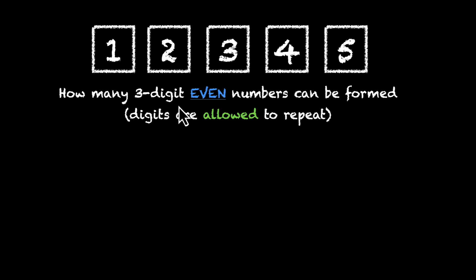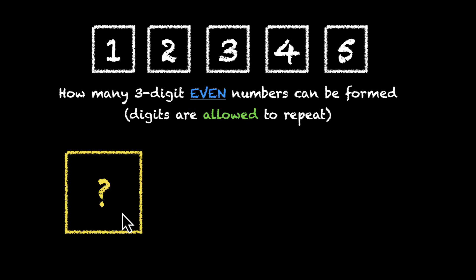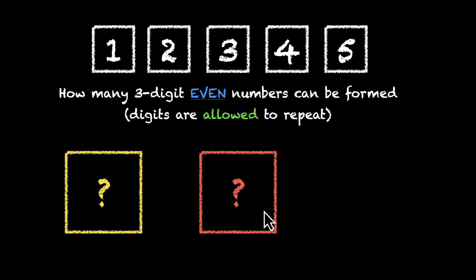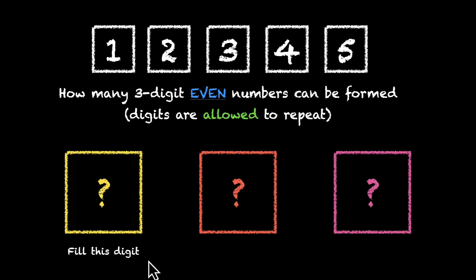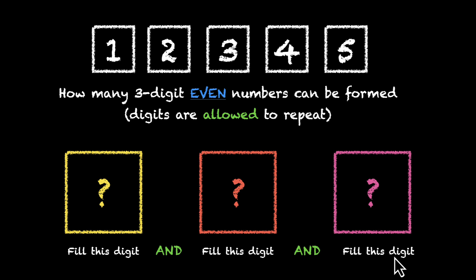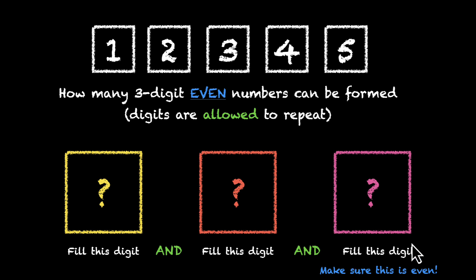So let's do this together. To make a 3-digit even number we'll do 3 things: we'll first fill this digit, then this one, and then the last one. And how do we make sure that this number is even? Well, we'll have to make sure that this last digit is even. So if the last digit is even, the entire number will also be even.